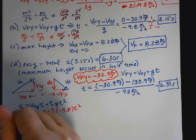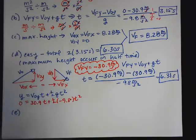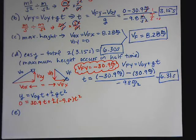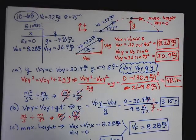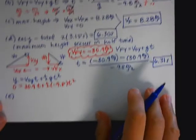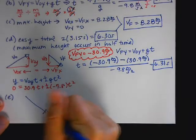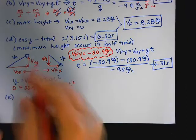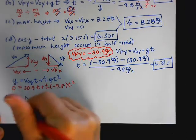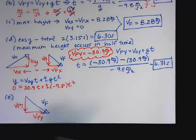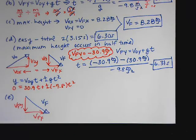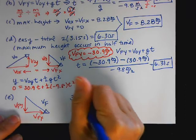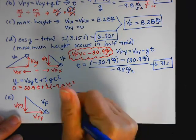Part E says determine the projectile speed when it reaches its launch height. At launch height, the final velocity V-F is made up of V-F-Y and V-F-X. Since V-naught X equals V-F-X and V-naught Y equals V-F-Y in magnitude, the final speed is the same as the initial speed — 32 meters per second — because we're not doing air resistance yet.